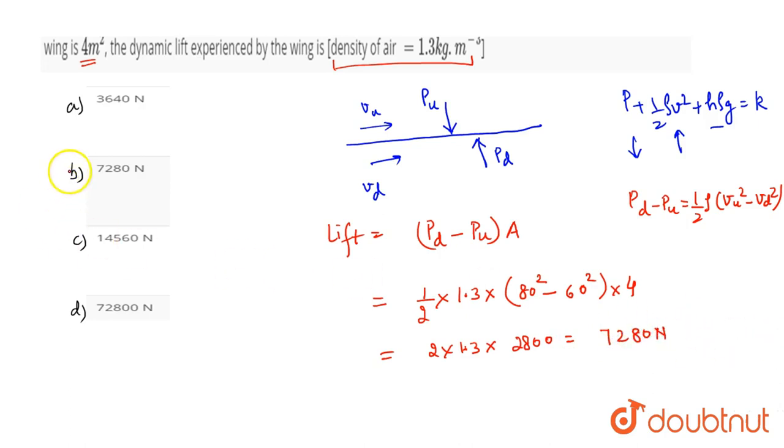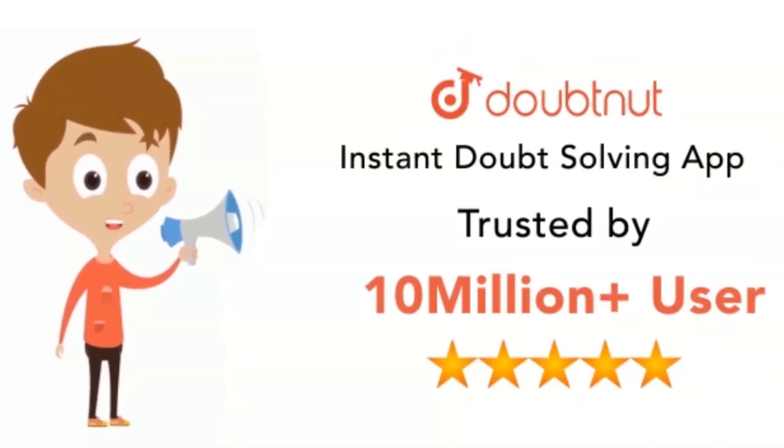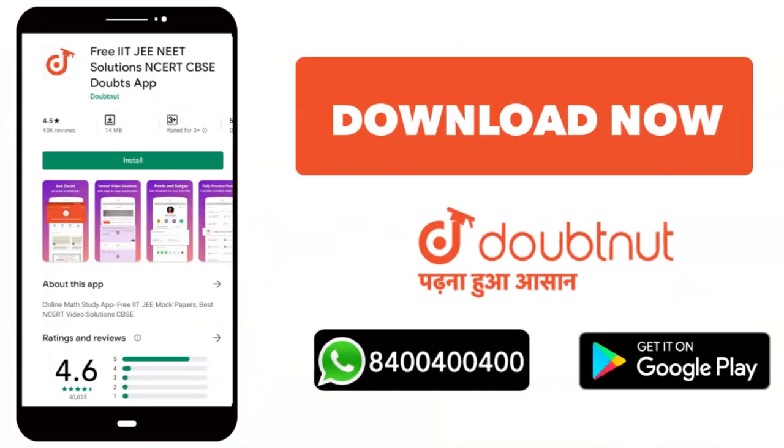Now the answer is option B, 7280 newton. For class 6 to 12, NEET, IIT mains and advanced students, today download Doubtnut on WhatsApp.